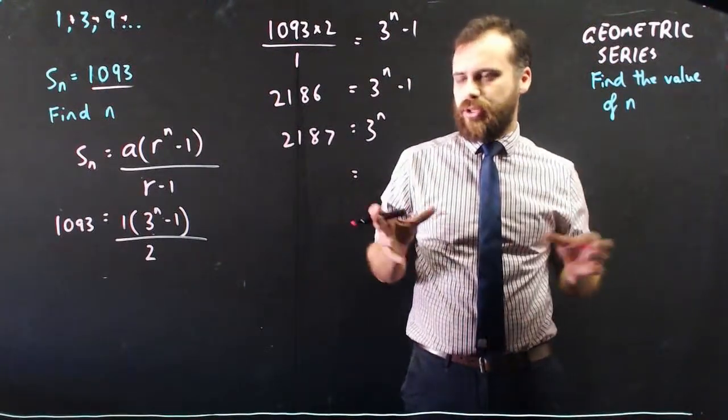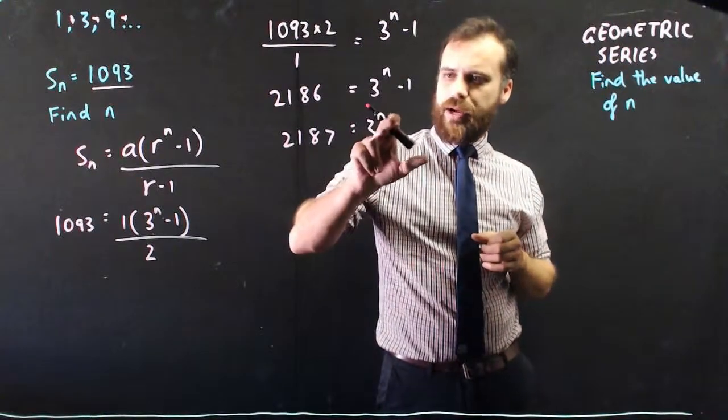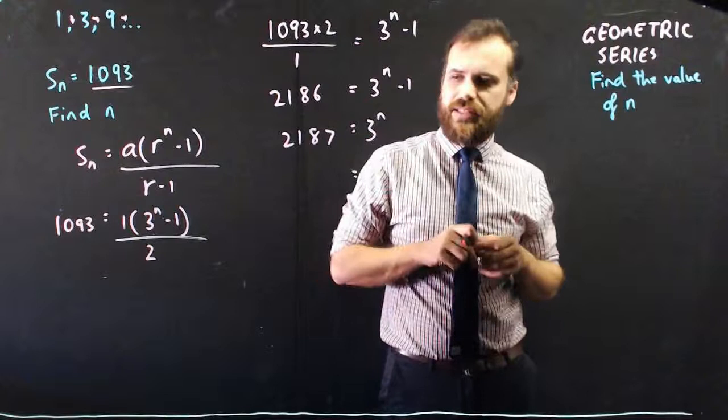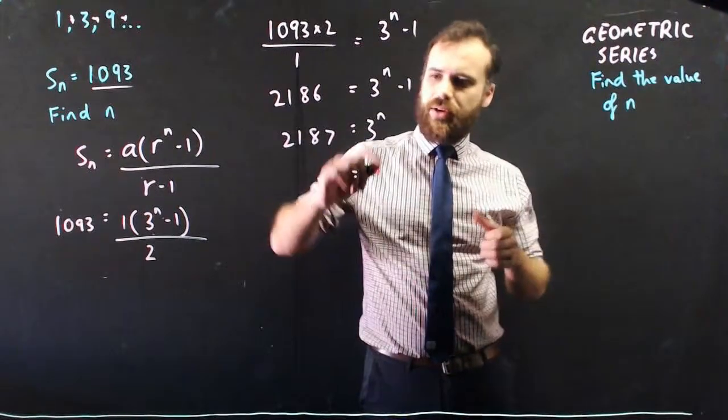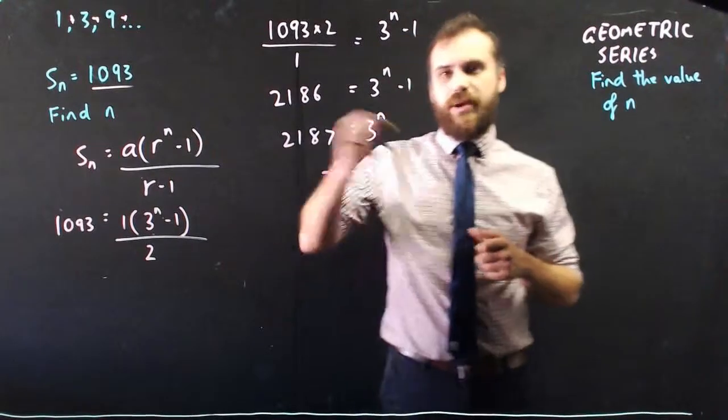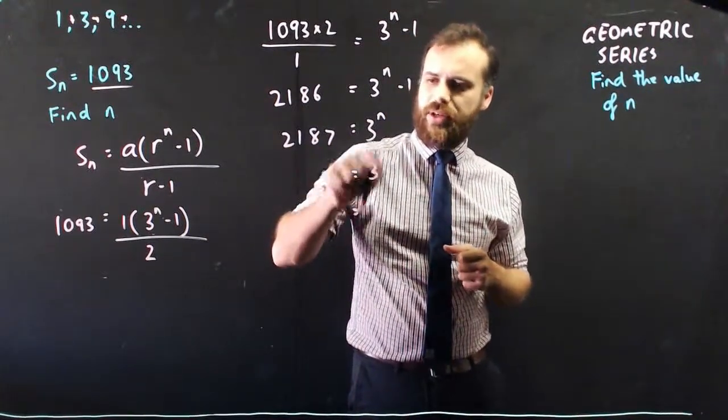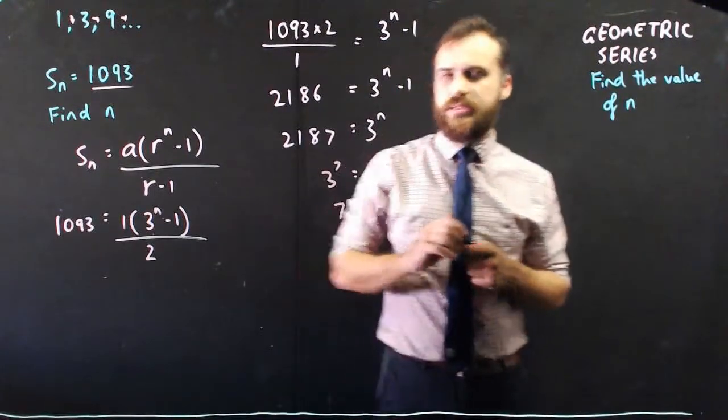And from here, if you know something about logarithms you could probably use logarithms here, but you really want to know 3 to the power of what makes 2,187. You can play around with your calculator a little bit. The answer is 3 to the power of 7. So our n value, if 3 to the power of 7 equals 3 to the power of n, then n equals 7.